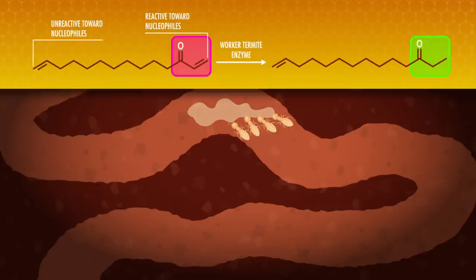Specifically, the soldier termite's toxin has a functional group called an enone, and the worker termite's enzyme selectively removes the alkene from that functional group. Enones can undergo a reaction called conjugate addition that simple alkenes can't. And this reaction makes the enone toxic to invaders. Let's see why, and explore some more reactions and properties of enolates.